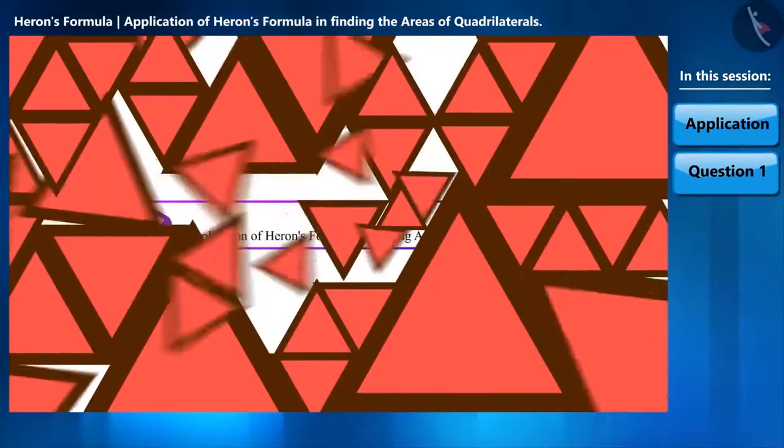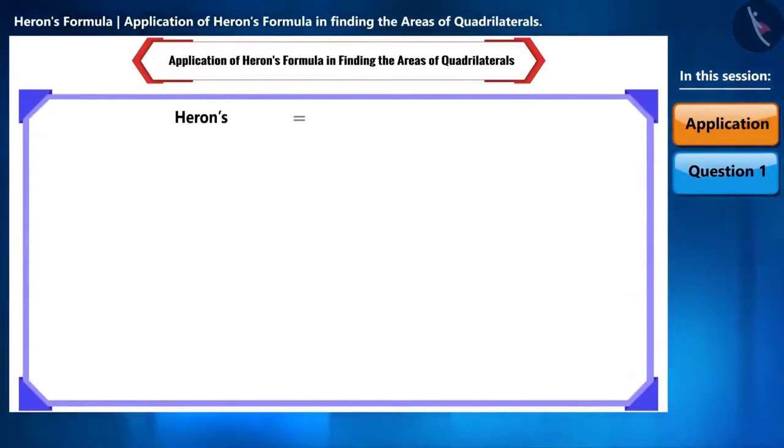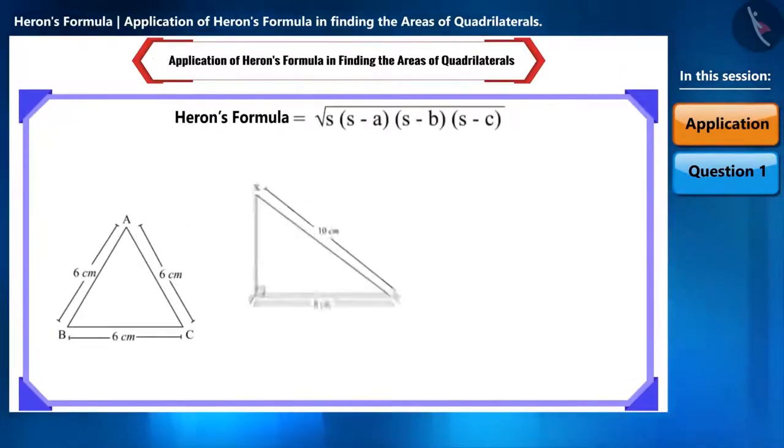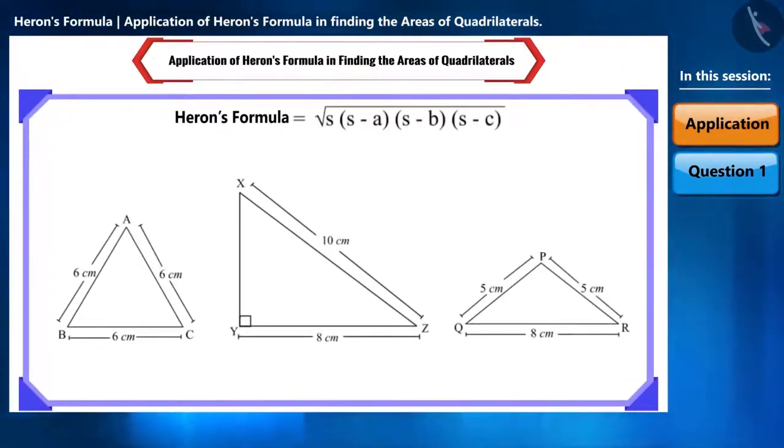So let's start. Friends, using Heron's formula, we can find the area of any triangle when we know the length of all its three sides.